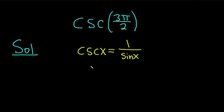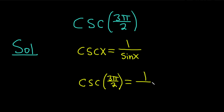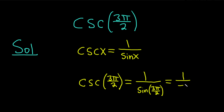For us, x is 3π/2. So the cosecant of 3π/2 is equal to 1 over the sine of 3π/2. The sine of 3π/2 is negative 1.